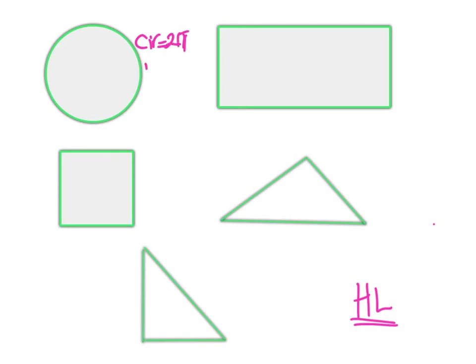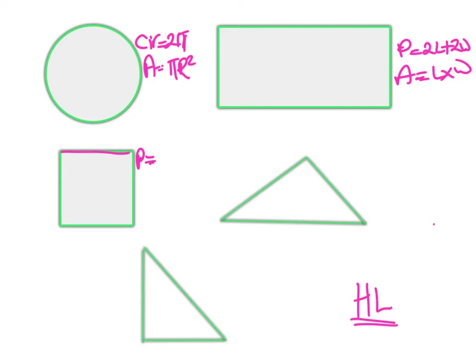The area of a circle is πr². This is a rectangle, so perimeter equals twice the length plus twice the width, and area equals length times width. This is a square, so perimeter equals 4 times the side length l.